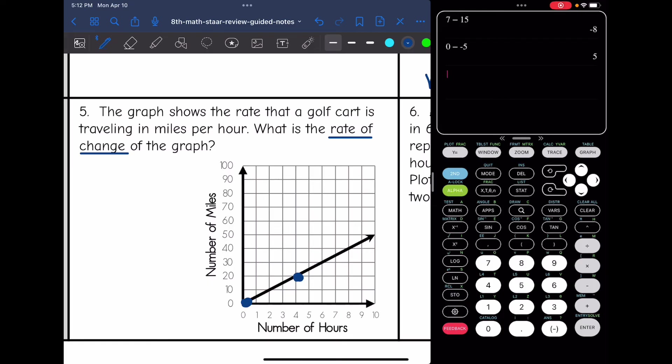So I'm going to do rise over run between two perfect points. So here's two perfect points. My rise, I go up two spaces, but I am counting by 10s on my y-axis. So that's really 20 for the rise. And then my run, I go over one, two, three, four spaces, and it's just counting by one. So that is four. So the slope or the rate of change is 20 over four, which is five.